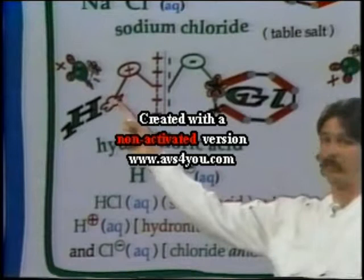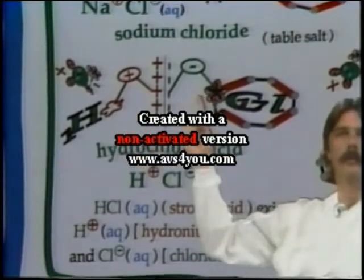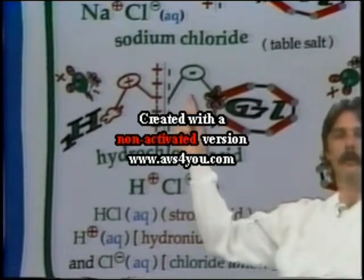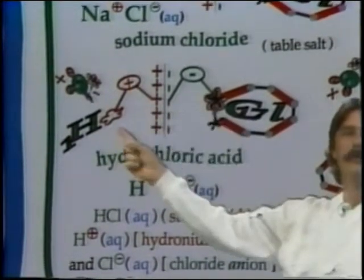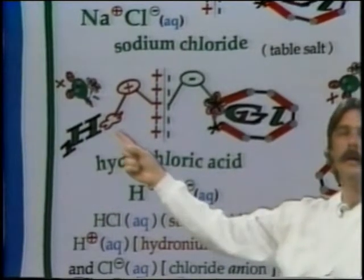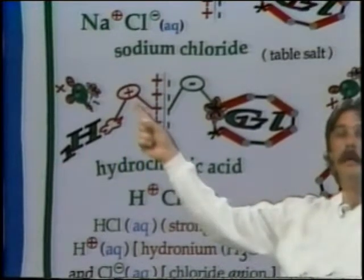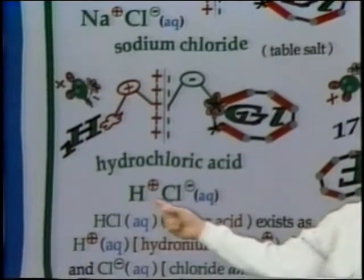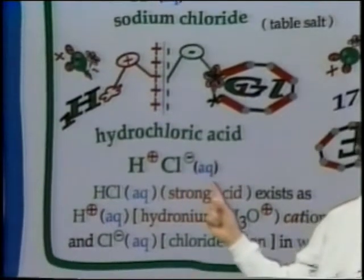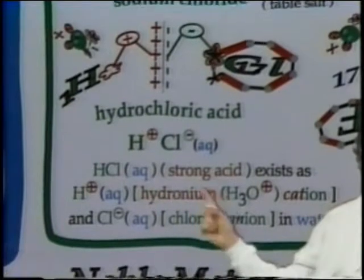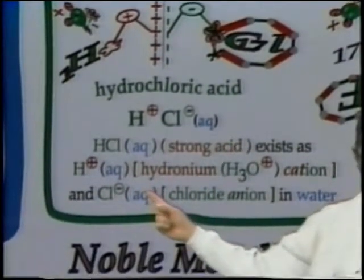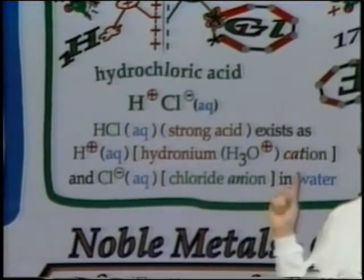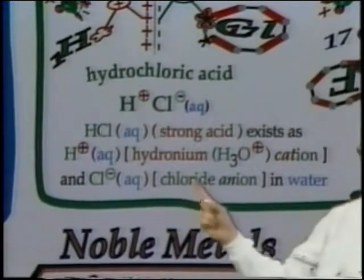Hydrogen, with its one proton and one electron: when that one electron goes to chlorine, it fills chlorine's octet, making chlorine stable. Chlorine with the negative charge becomes chloride anion, while hydrogen loses its electron and is left with just a proton — a positive charge. This is hydrochloric acid. In water, you have H-plus and Cl-minus (aq). Hydrochloric acid is a strong acid because the proton is given up very easily in water, forming hydronium (H3O+) cation and chloride anion.